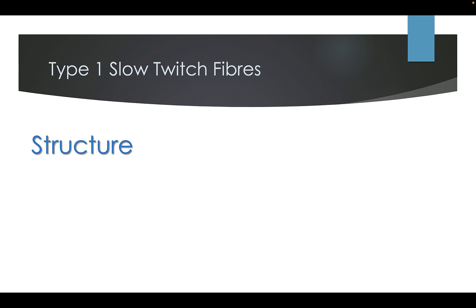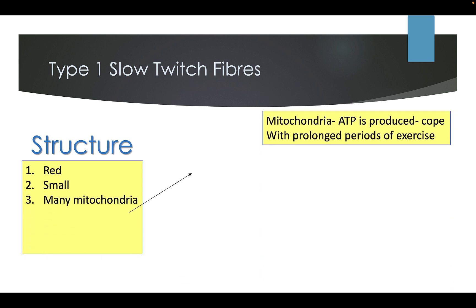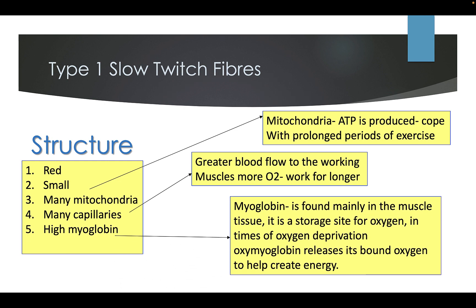The structure of Type 1 slow twitch fibres: they are red and small. They have many mitochondria, where ATP is produced to cope with a prolonged period of exercise. They have many capillaries, which create greater blood flow to the working muscles, delivering more oxygen for longer. They have high myoglobin — a store site for oxygen found mainly in muscle tissue, which releases its bound oxygen during oxygen deprivation to help create energy. They also have low glycogen.